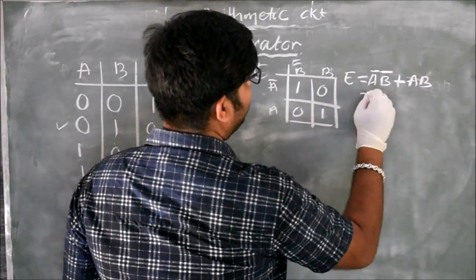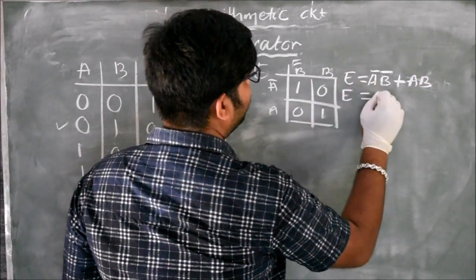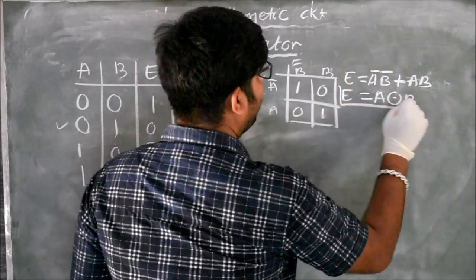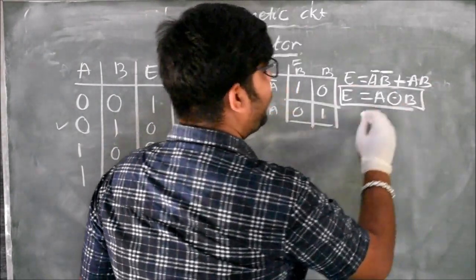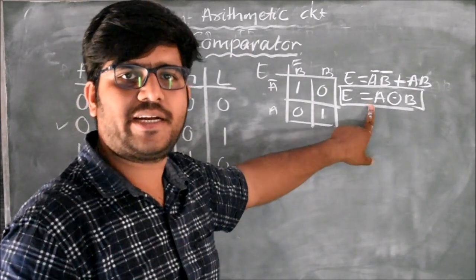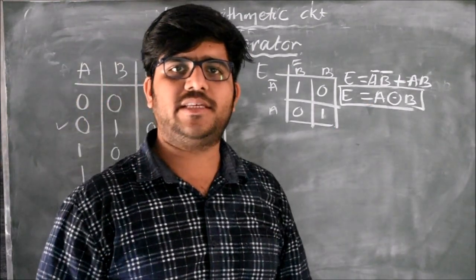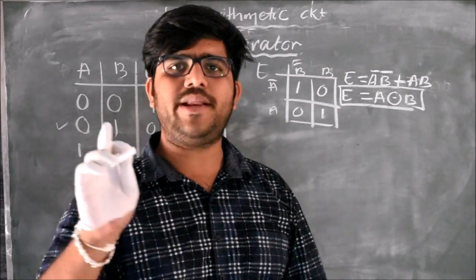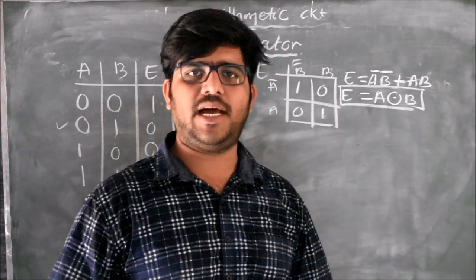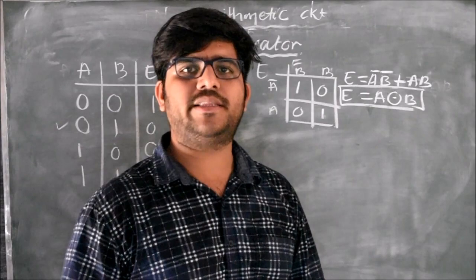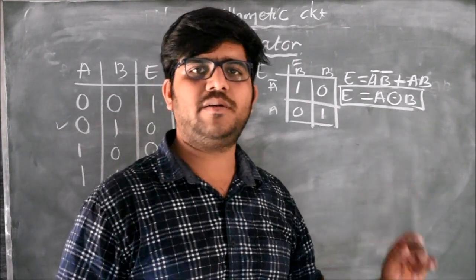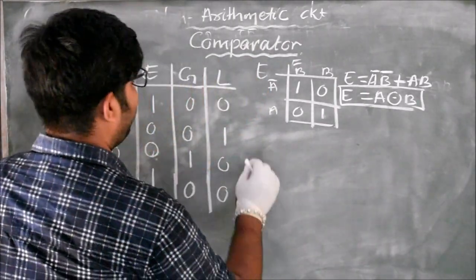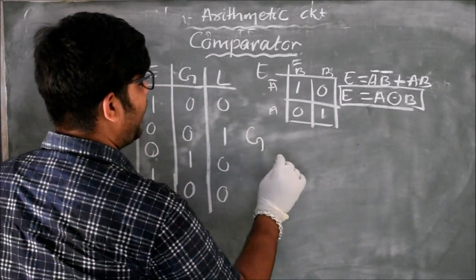The equality expression simplifies to: Equal = A̅B̅ + AB, which is nothing but A XNOR B. So it is very clear that the XNOR gate is the equality comparator. If you see the term 'equality comparator' in your exam, it should be clear that it is nothing but the XNOR gate.